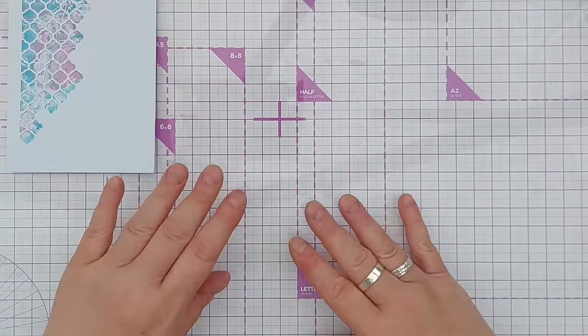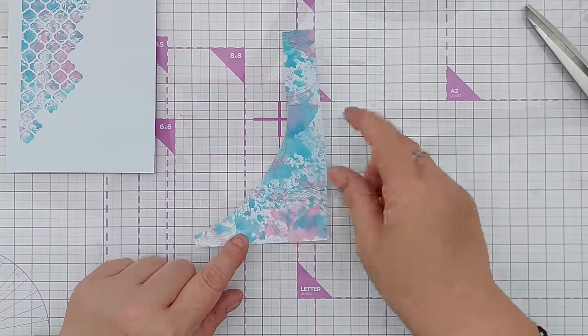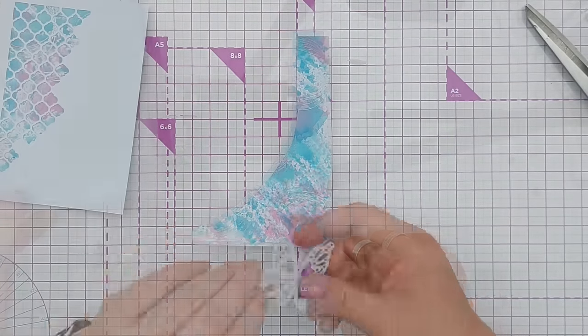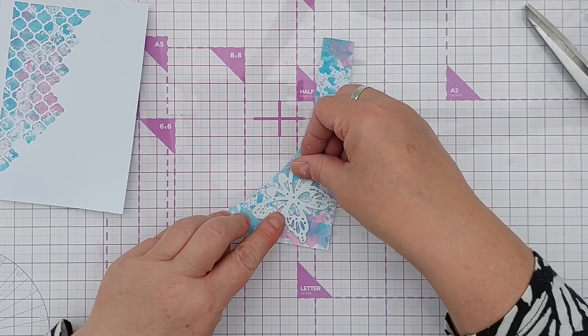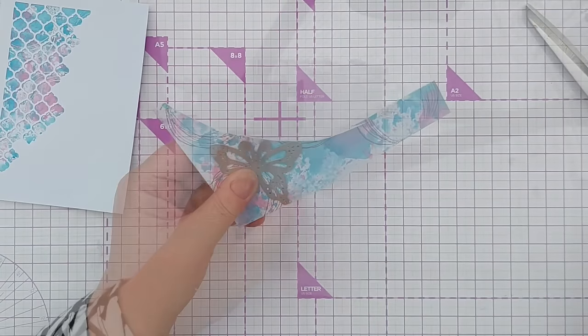So that's ready for a focal point now which I'm going to create using the bit that I cut off. I'm going to die cut—hopefully I've got enough, yep just about—I'm going to die cut a butterfly from this bit.